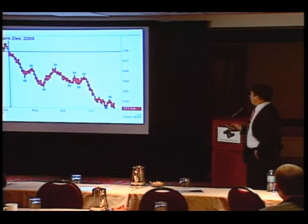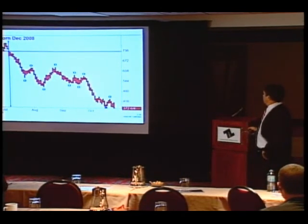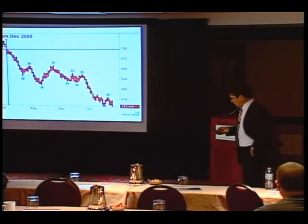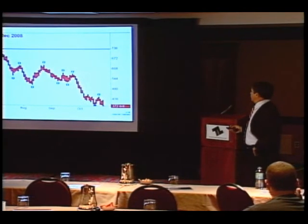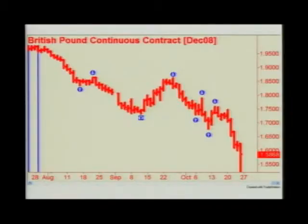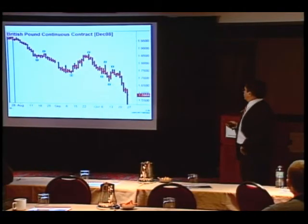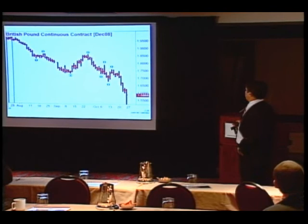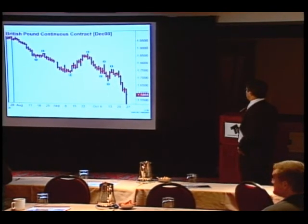We looked at the corn head and shoulders top earlier. This three-bar swing pattern has remained intact all the way down — a move of several dollars in corn and about $15,000 in the futures. That British pound trade that wasn't exciting to me turned out to be quite a move. I felt the other patterns were more distinctive, but this three-bar swing remained intact, although you did have to hold through quite a correction.